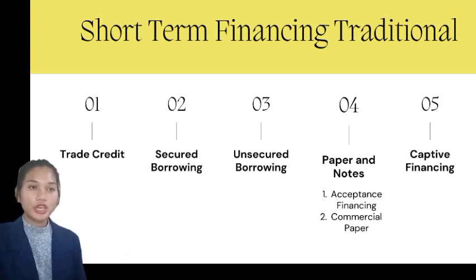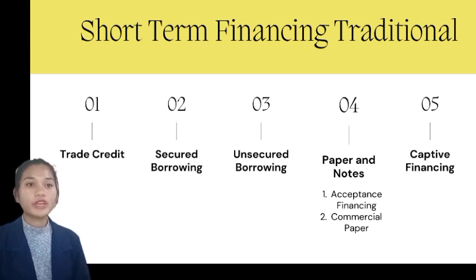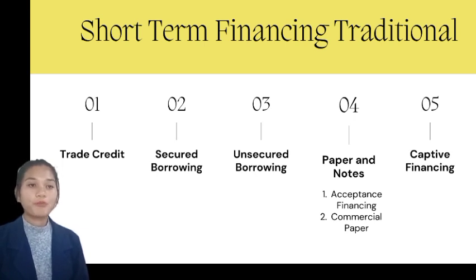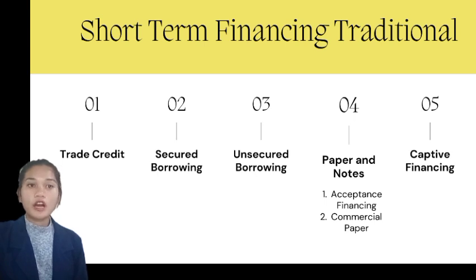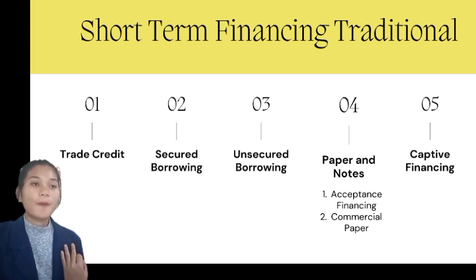The third is unsecured borrowings. Unsecured lines of credit, revolving loans, and short-term loans are all referred to as unsecured loans, in the sense that they are not backed by any particular asset or collection of assets. The borrower's overall financing and operational strength, as determined by the lenders, serves as security of unsecured credit. The fourth is paper and notes. Short-term money is also available through two-name or three-name paper of various types.